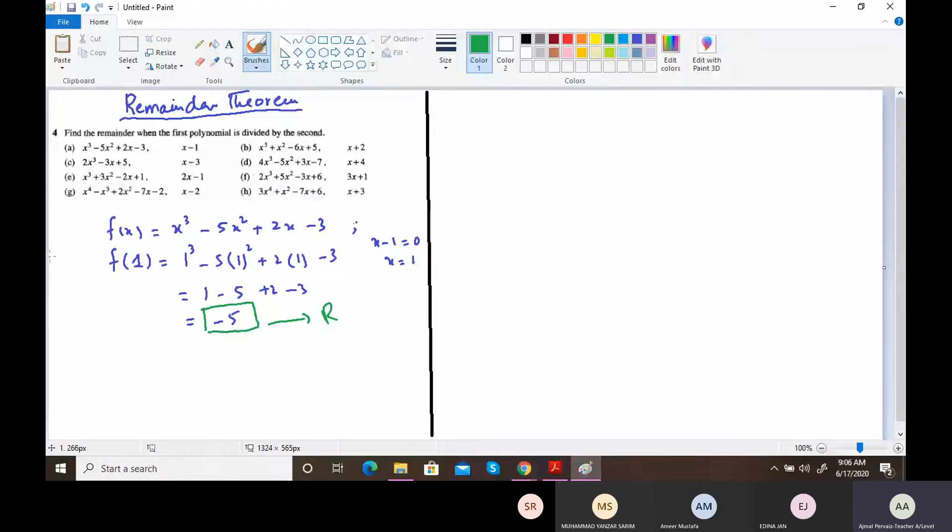Let's take another example. This was part A I took it for you, and I am taking now F part over here. Let's say it says f(x) = 2x³ + 5x² - 3x + 6, and the second polynomial which is given to us which will be dividing it, 3x + 1 = 0.